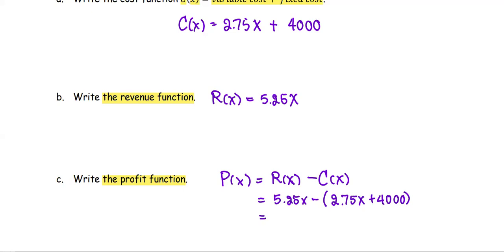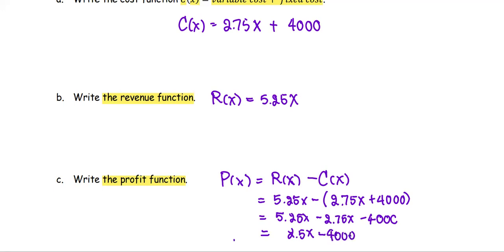We simplify the expression by removing the grouping symbols and applying the negative sign to both terms: 5.25x minus 2.75x minus 4,000. That's the profit function.